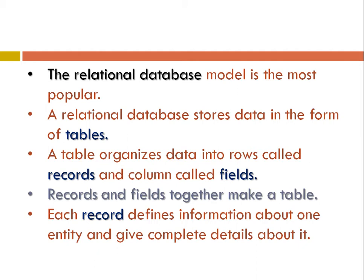A relational database stores data in the form of tables. A table organizes data into rows called records and columns called fields. Fields and records together make a table. Each field defines information of a certain type across all records. Each record defines information about one entity and contains complete details about it. Tables, fields, and records are the elements of a relational database.